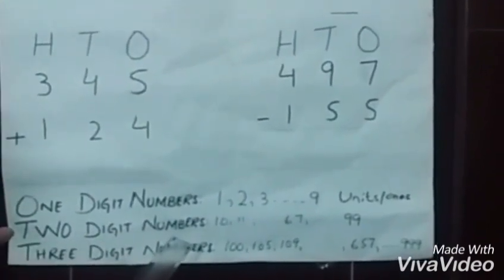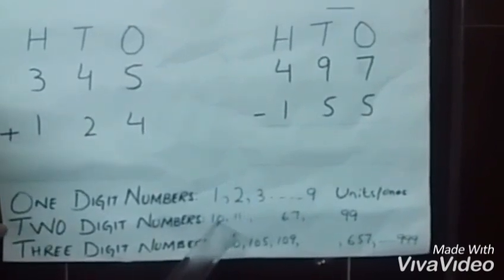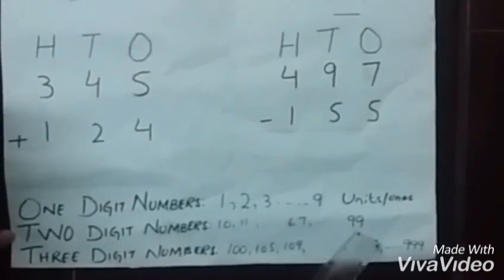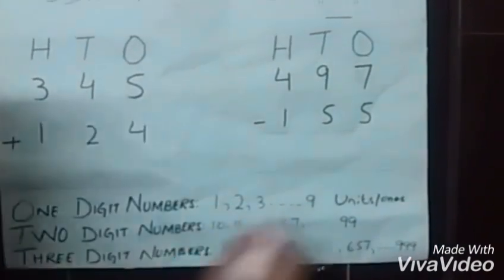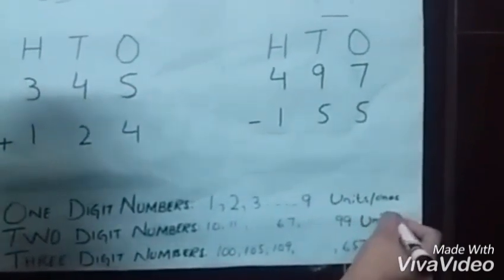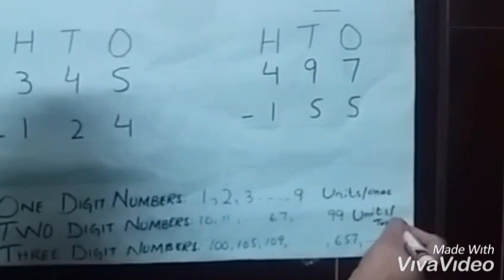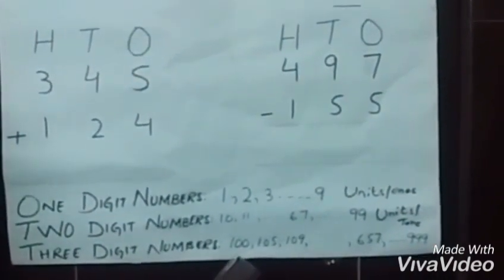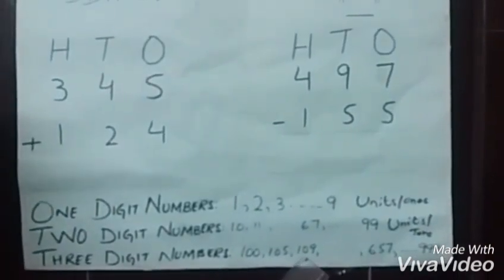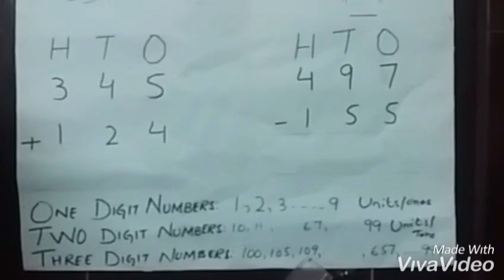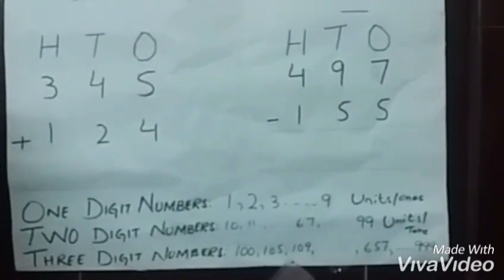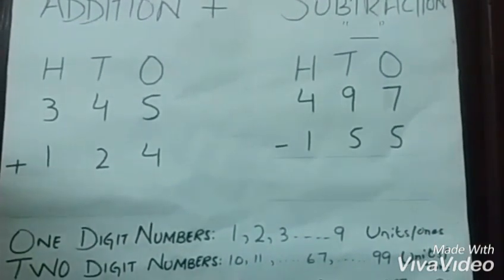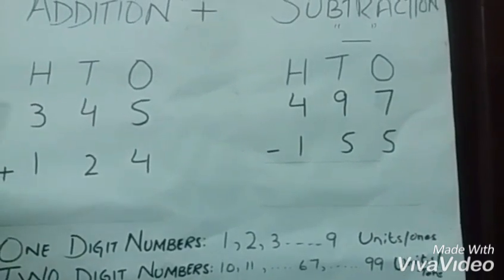Two-digit numbers consist of two digits, from 10 to 99, consisting of units and tens. Next, we have three-digit numbers. A three-digit number is a number in which we have three digits, like 109 consists of three digits: 9, 0, and 1—units, tens, and hundreds, up to 999.